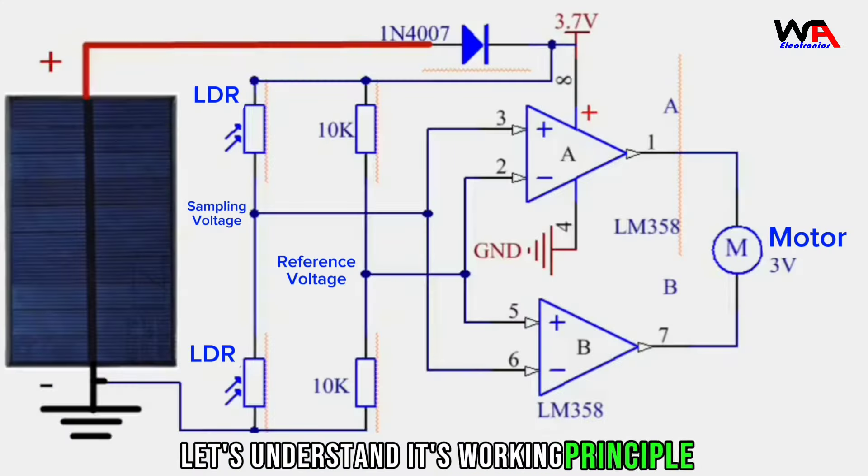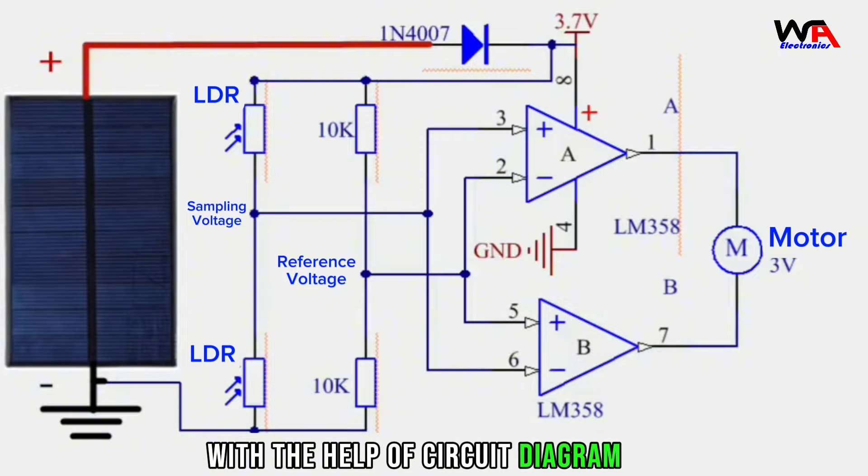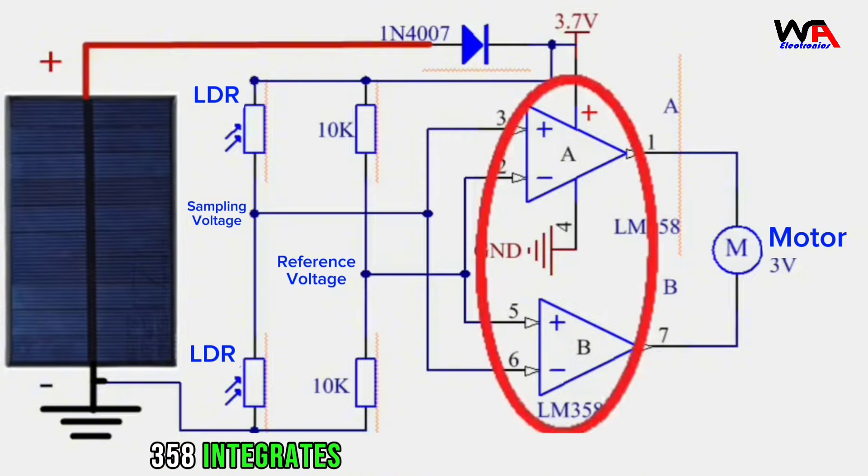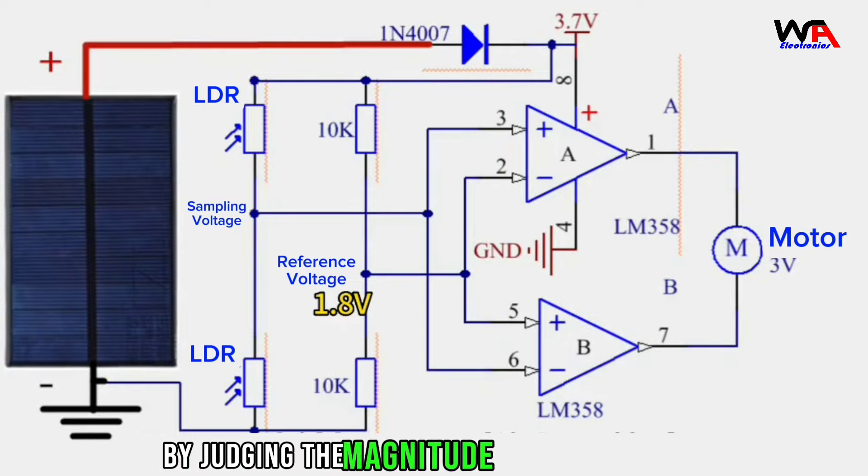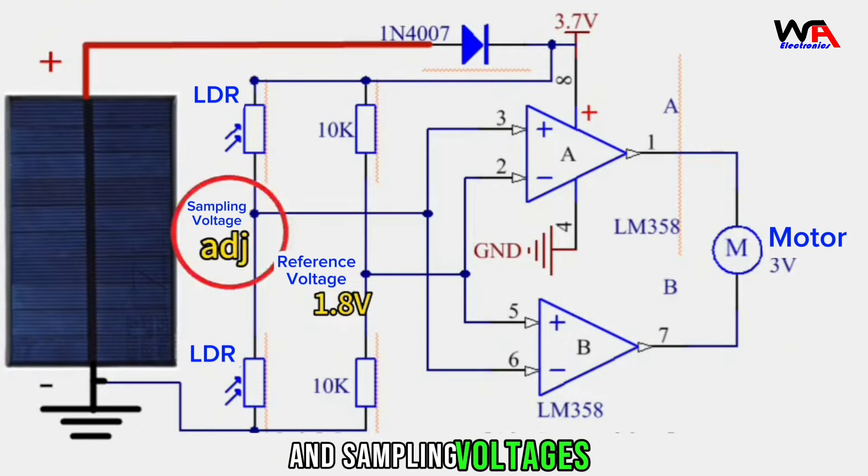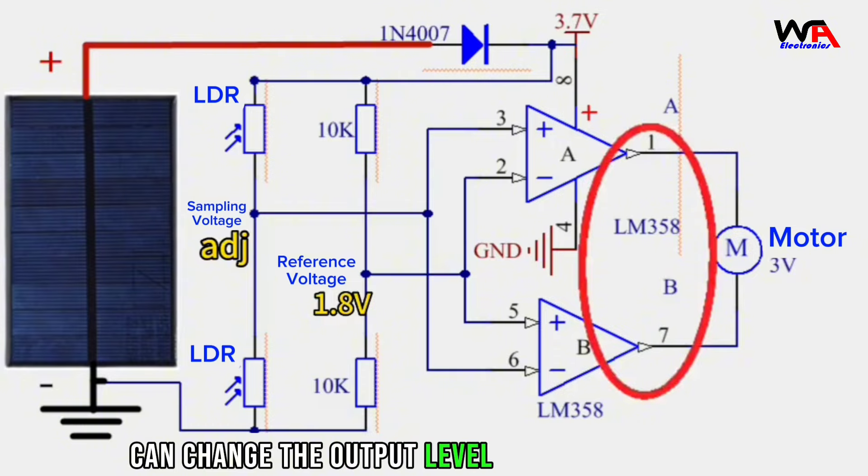Let's understand its working principle with the help of circuit diagram. LM358 integrates two comparators internally. By judging the magnitude of the reference and sampling voltages, it can change the output level of the comparator.